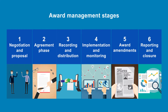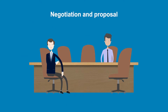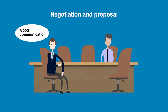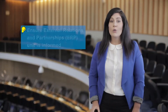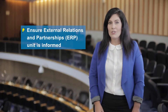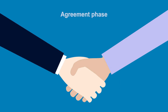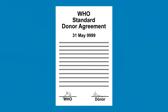Here is the workflow from negotiation to donor reporting and award closure. During the first stage it is important to establish good communication, clear expectations, and to ensure that the External Relations and Partnerships Unit or ERP is informed. Whilst there are different agreements that can be used, we encourage the use of WHO's standard donor agreement as deviations require legal clearance.